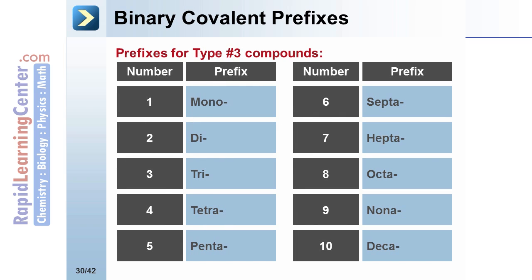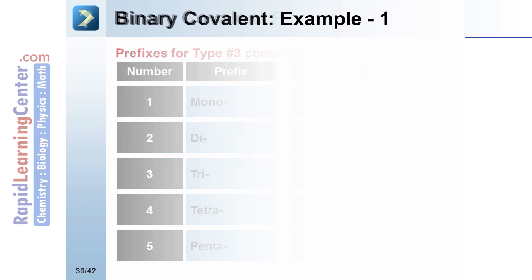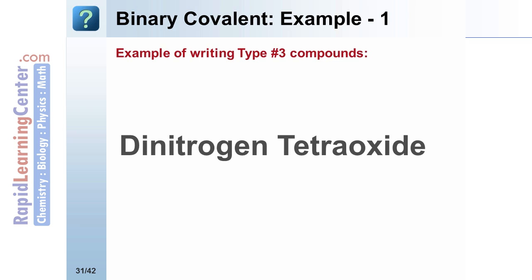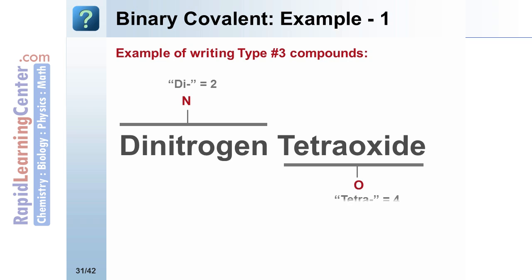Here are the prefixes used for each of the subscripts one through ten. An example: dinitrogen tetraoxide. Nitrogen is the symbol N. Di indicates two. Oxide is the symbol O, giving N2O. Tetra indicates four, giving N2O4.